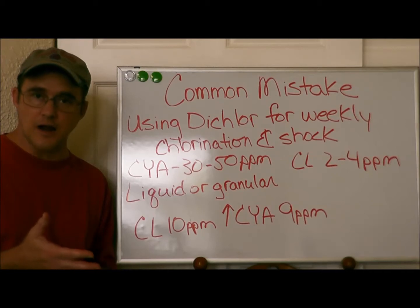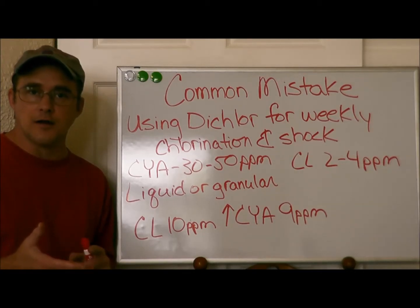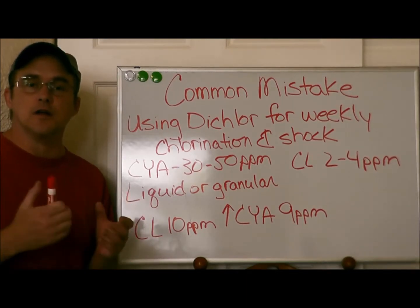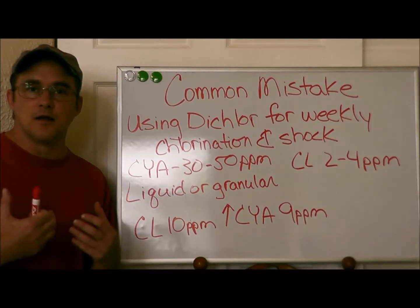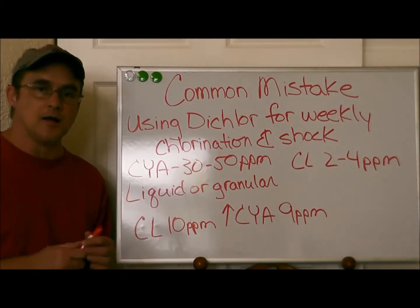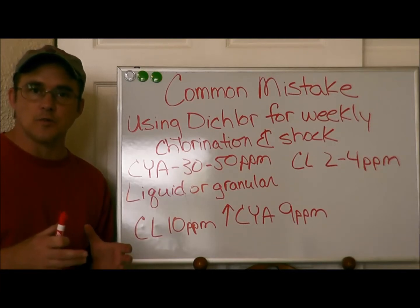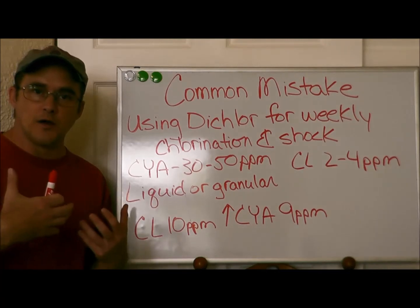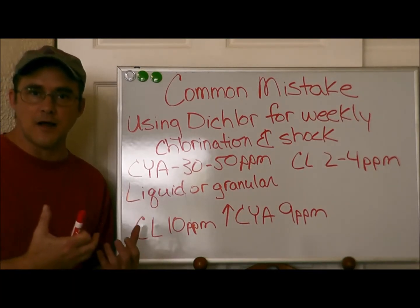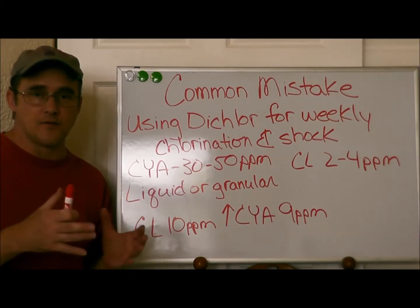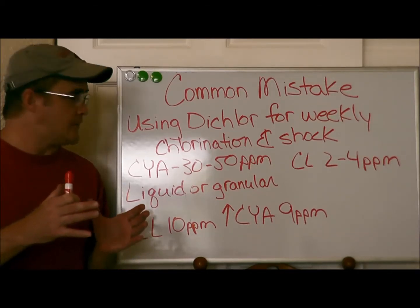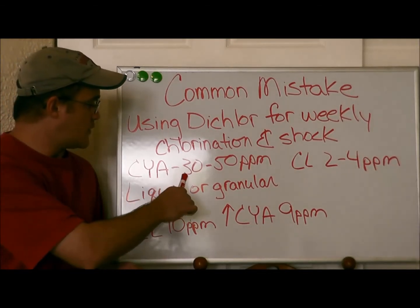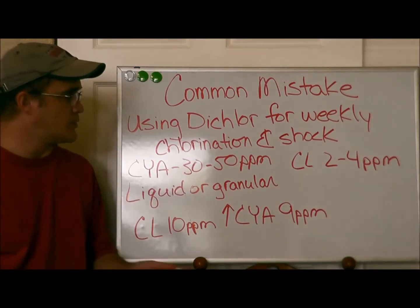The three types are dichlor, liquid chlorine, and granular chlorine. Dichlor is a very special kind of chlorine — unlike the other two. Liquid is sodium hypochlorite and granular is calcium hypochlorite. Dichlor is a stabilized form of chlorine, which means it has chlorine and cyanuric acid in it. When you weekly dose your pool with dichlor — and especially if you're shocking your pool with dichlor — it's going to raise the cyanuric acid very, very quickly. The cyanuric acid level is supposed to be between 30 to 50 parts per million.